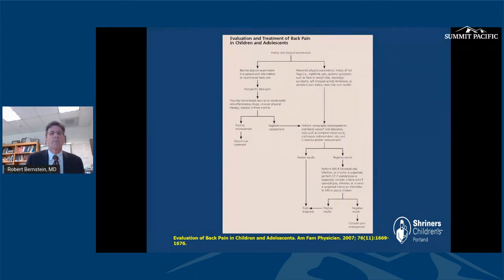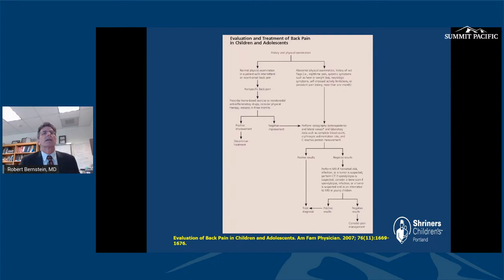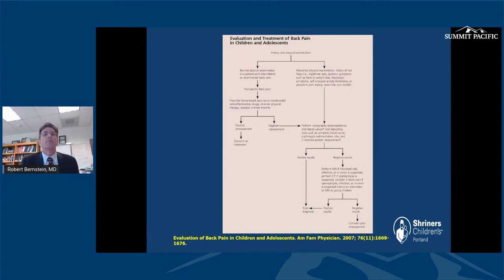This is an algorithm I published in the American Family Physician in 2007. Starting with history and physical examination — if everything is normal with non-specific back pain, try anti-inflammatory medication and physical therapy and monitor over months. If they don't improve or have an abnormal finding, proceed with AP and lateral radiography and consider lab studies — ESR, CRP, and CBC. Based on those results, either treat the diagnosis, or if results are negative or indeterminate, proceed with MRI or CT scan. If all of these are negative — a rare occasion — we may occasionally refer to pain management.